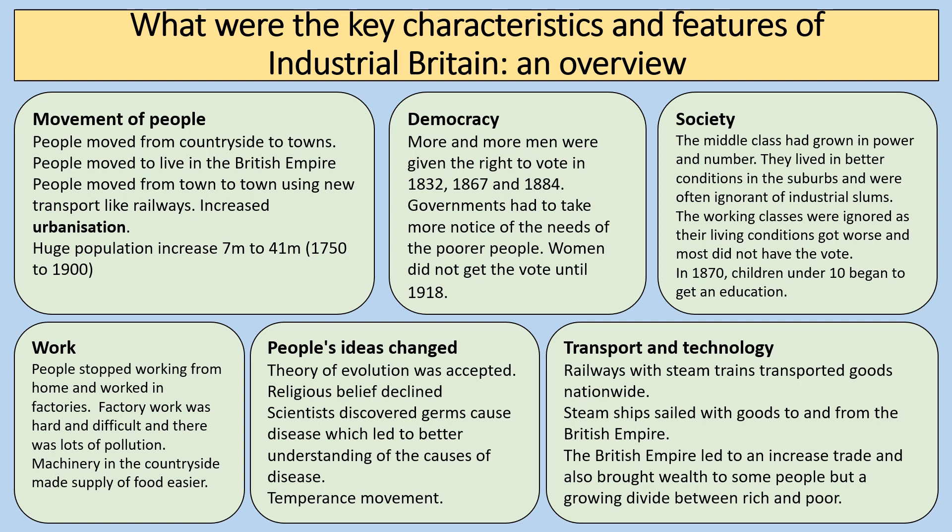In 1870, children under 10 began to get a guaranteed education. In terms of work, people stopped working from home in the so-called domestic system and began to work in factories. Factory work was hard and difficult, with lots of pollution. Some changes in farming in the countryside made the food supply easier, so there were fewer problems like starvation and famine.